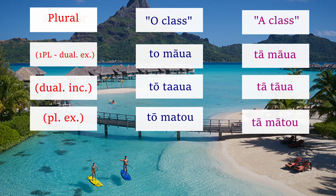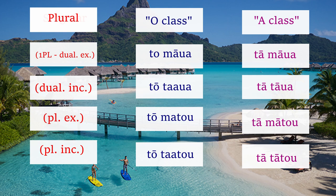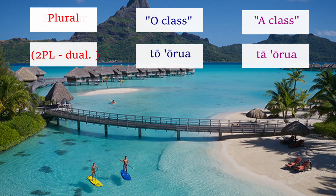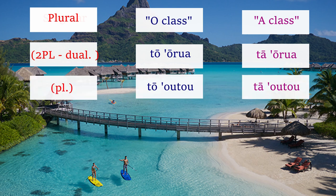In the first person plural exclusive — like saying 'me, Henry, and him, but without you' — you say to-mato in the O form and ta-mato in the A form. The first person plural inclusive — which is like 'me, Henry, and you, all of us included' — would be to-tatou in the O class and ta-tatou in the A class. The second person plural dual form — like 'you all' but only two people — is to-orua and ta-orua. And the second person plural — meaning more than two people — you would say to-outou and ta-outou.